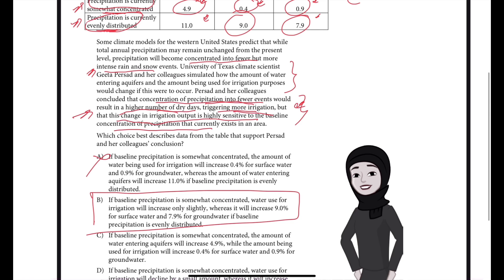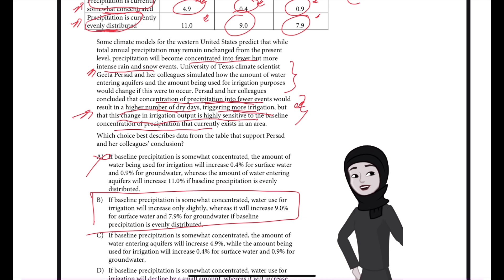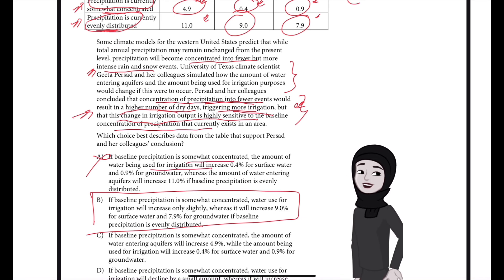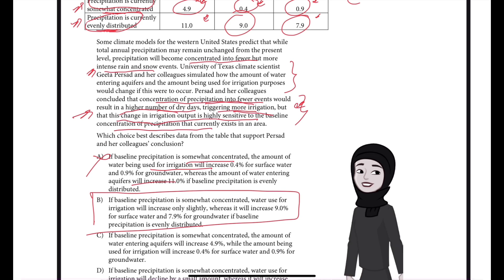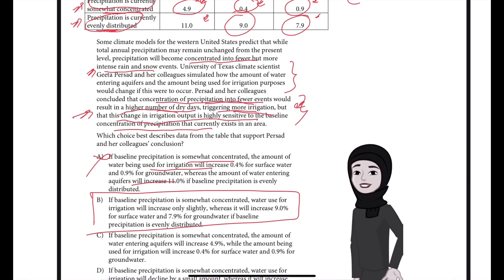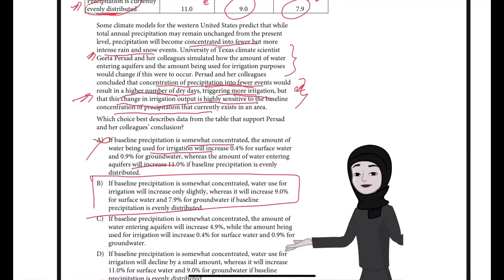Choice A is incorrect because it compares changes in the amount of water being used for irrigation to changes in the amount of water entering aquifers. Prasad and her colleagues' conclusion does not focus on changes to the amount of water entering aquifers. Rather, the researchers' conclusion focuses on changes to irrigation output relative to how concentrated or spread out the annual precipitation in the area is.